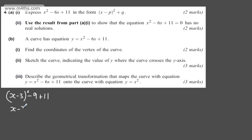Tidying this up: (x - 3)² + 2. We can see that the value of p is 3 and the value of q is 2.